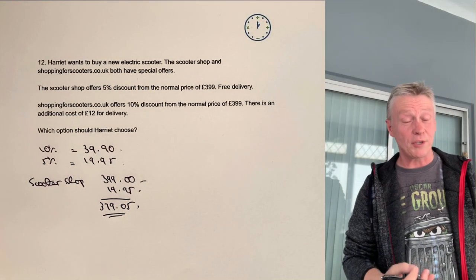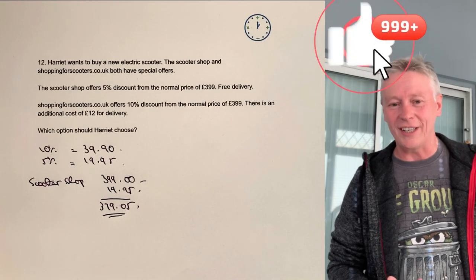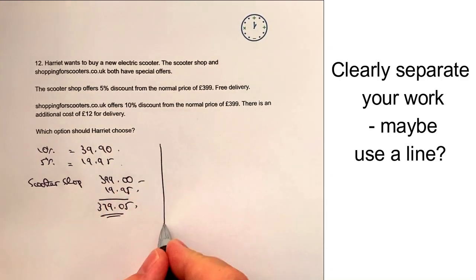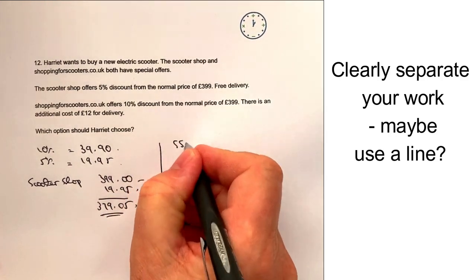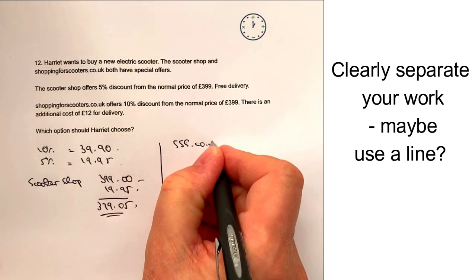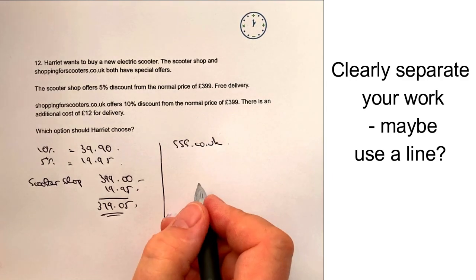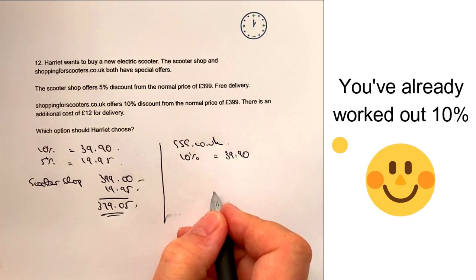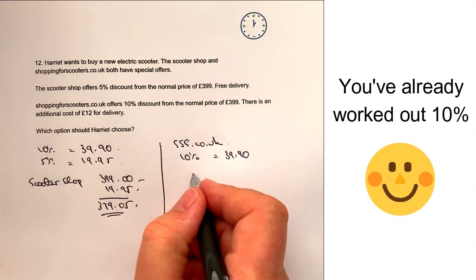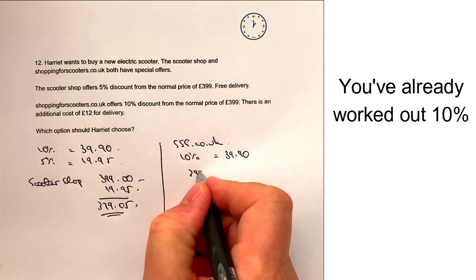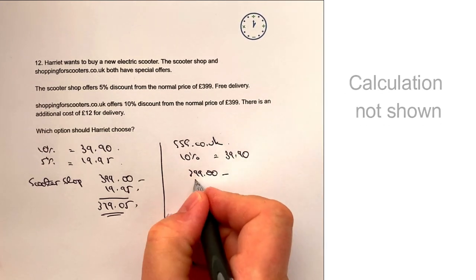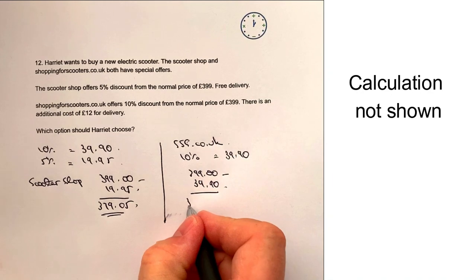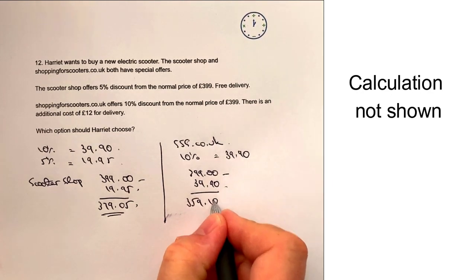Let's look at the website, Shopping for Scooters, which is a slightly different pricing model. With Shopping for Scooters, 10% is equal to £39.90. Taking that away from the £399 for the cost of the scooter, that's going to give me a total price of £359.10.